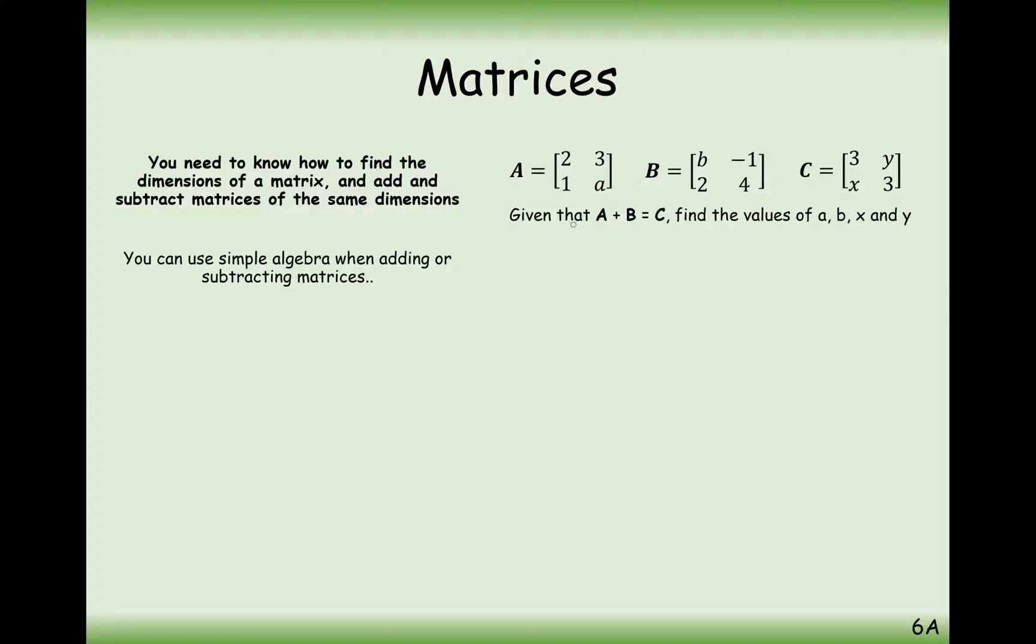The question here is, given that A plus B equals C, find the value of A, B, X, and Y. So let's go ahead and add these two matrices together, A and B, and the answer to this will give us C. Now if we want to find the value for B, what we've got to think of is the top left-hand values on the first two must add together to make the top left-hand value on the third matrix. So therefore, 2 plus B must equal 3, so B is obviously 1.